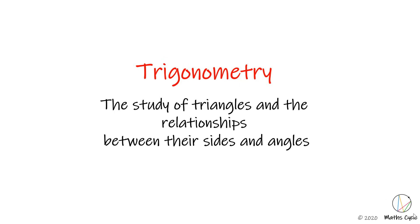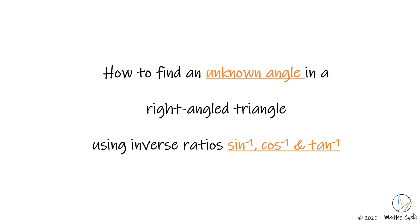Trigonometry — the study of triangles and the relationships between their sides and angles. In this video we are going to look at how to find an unknown angle in a right angle triangle using inverse ratios: sin inverse, cos inverse and tan inverse.